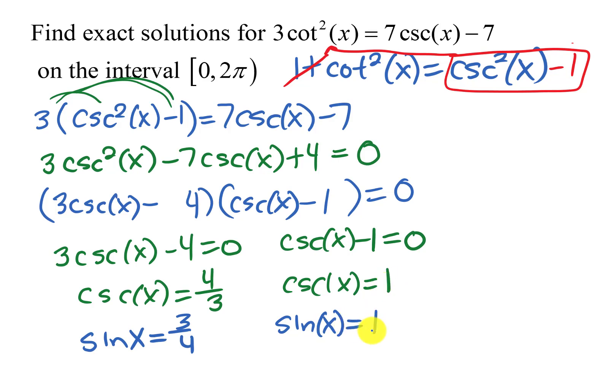Now I'm ready to answer this, but it wants exact solutions and there is not a value that I know for the angle on the unit circle for 3 fourths. And so it's not going to be something that works out nicely to pi thirds or pi sixths or something like that. So if I need it exact, I just have to express it in terms of the inverse trig function. So x is going to equal the arc sine of 3 fourths.